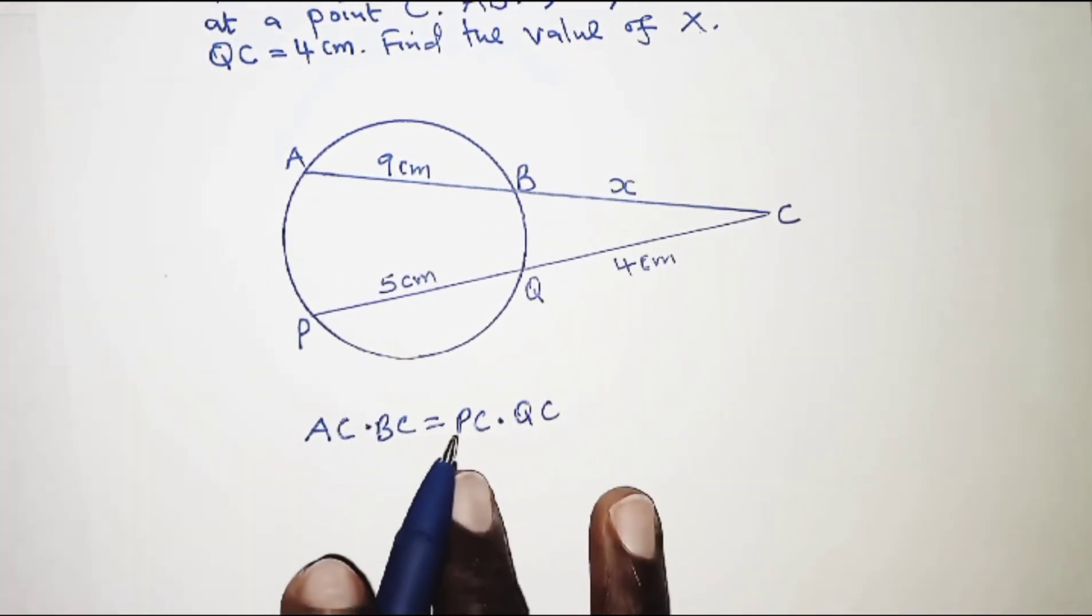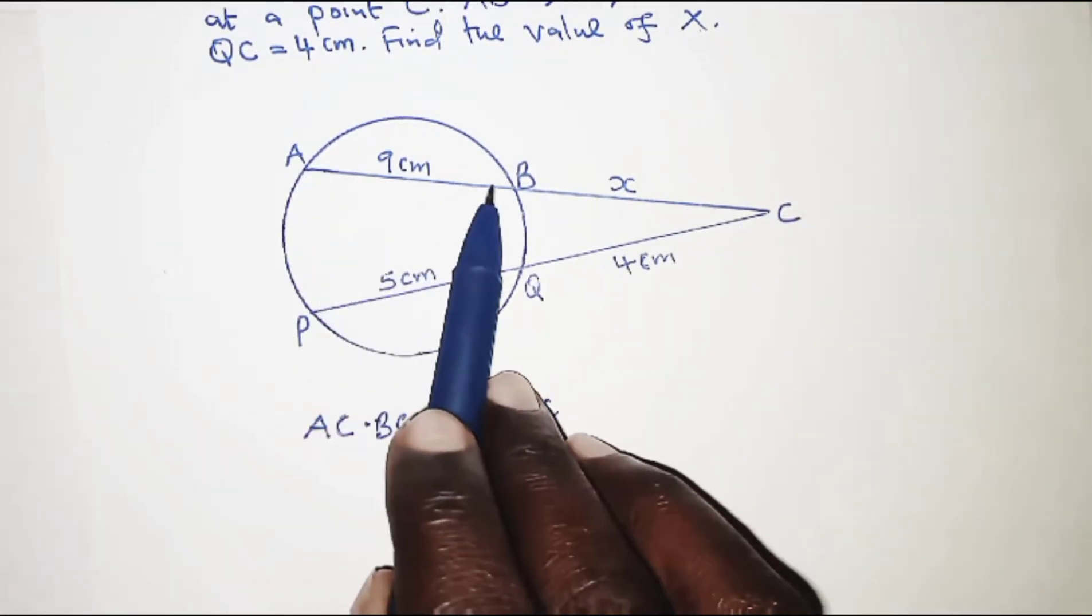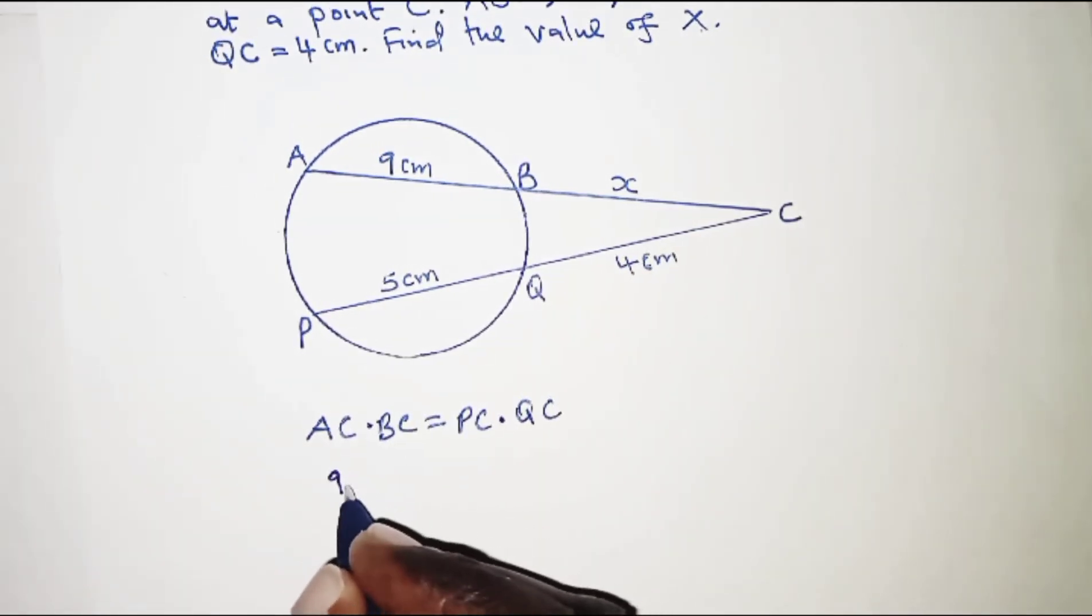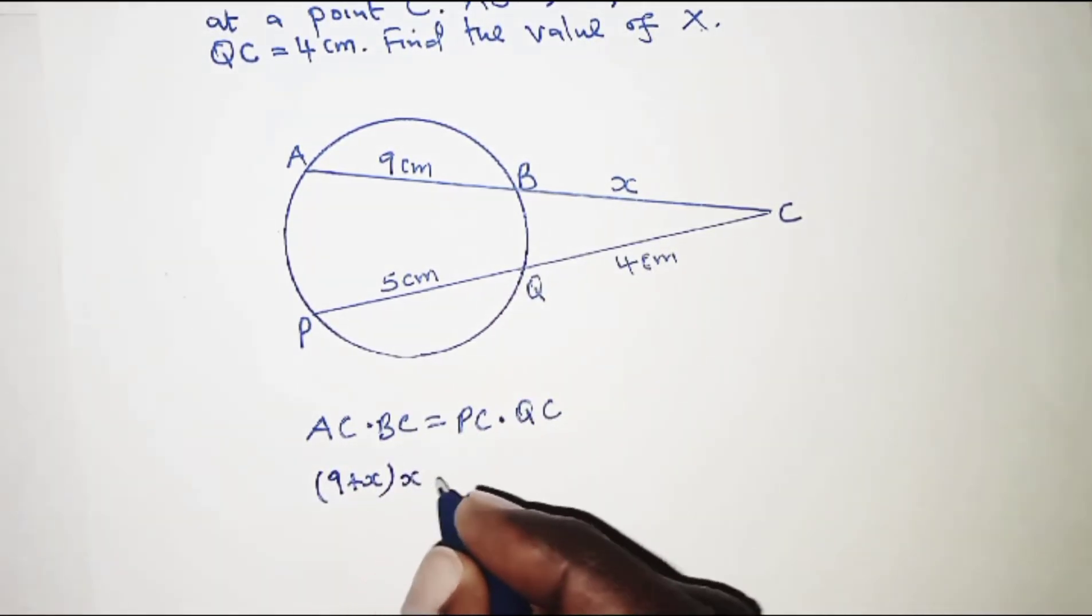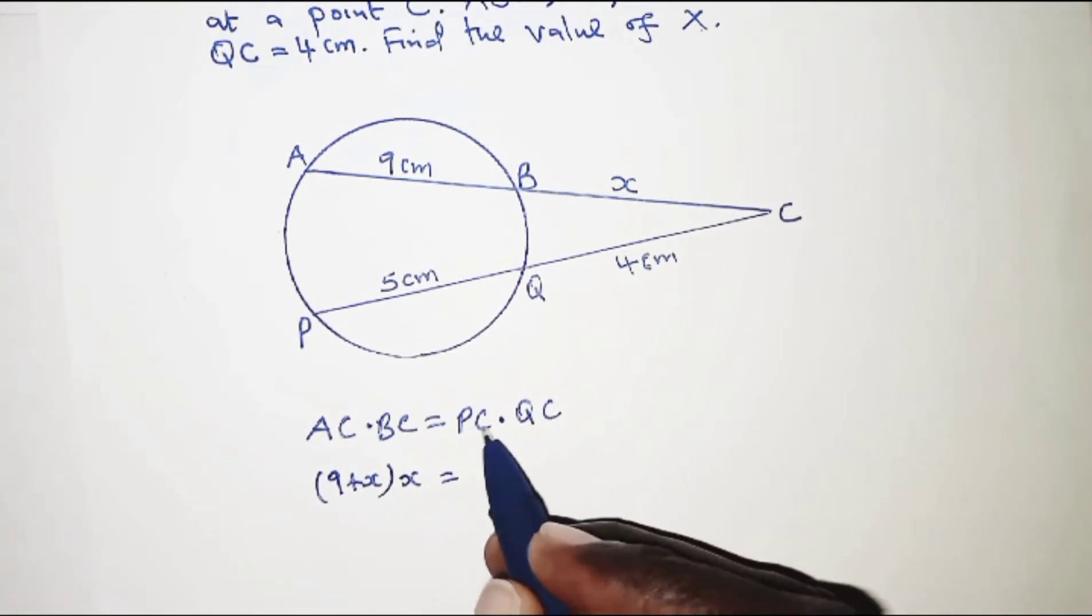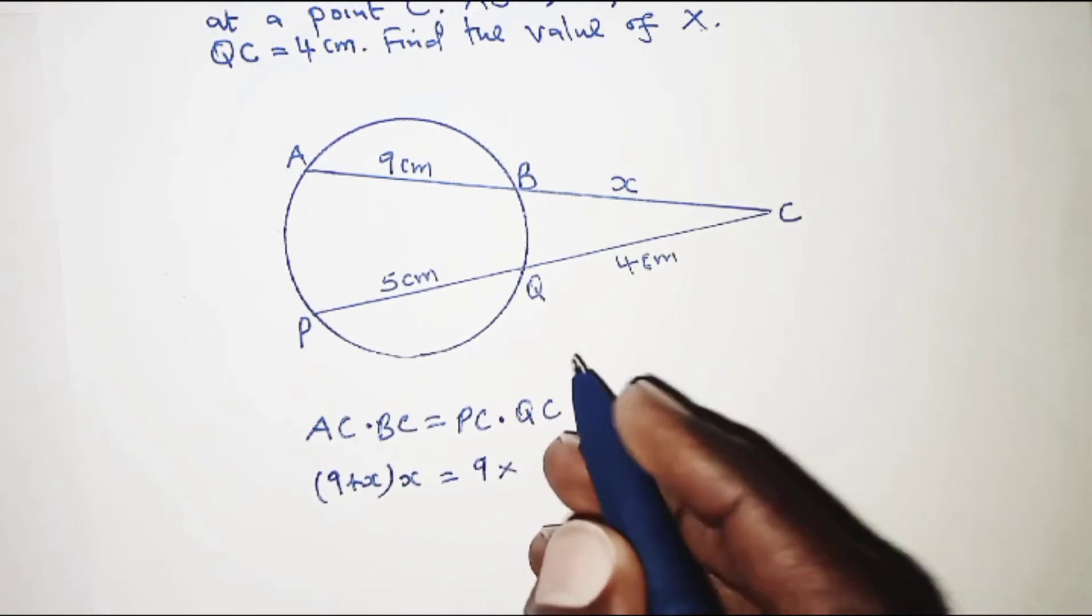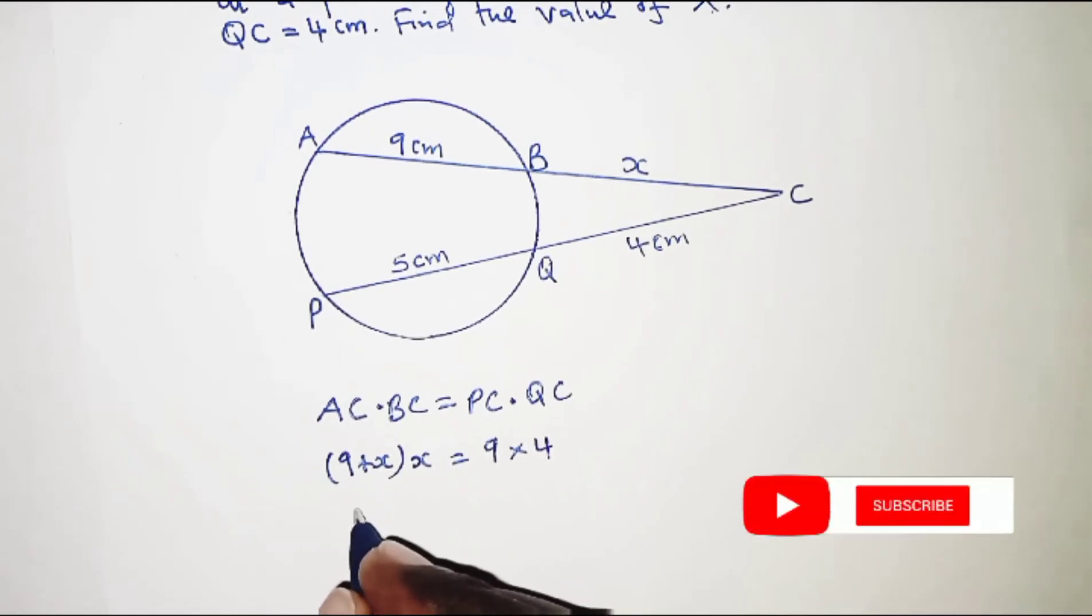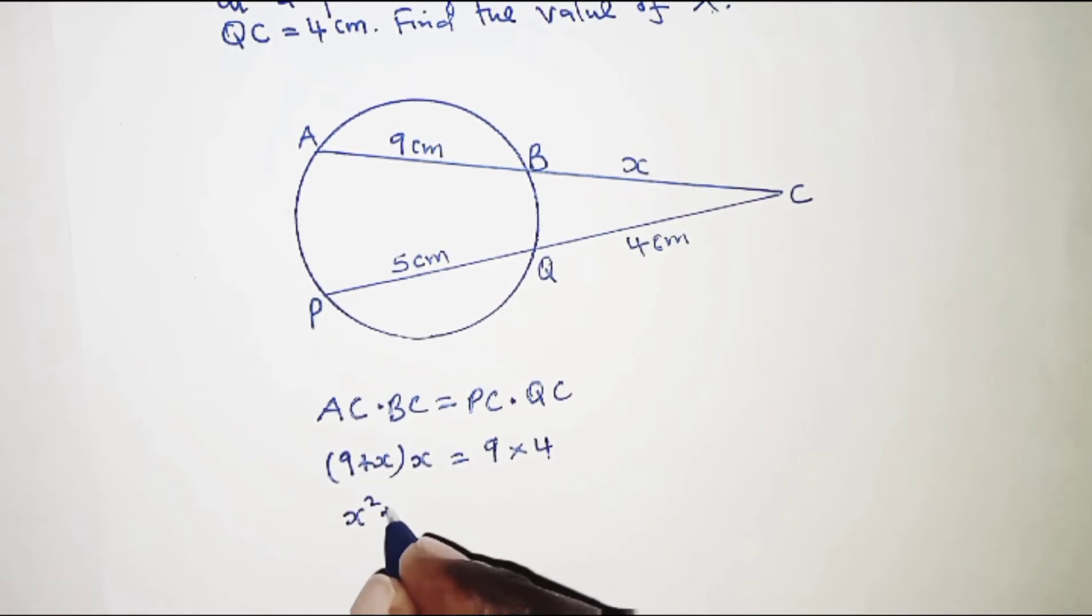Length AC is 9 plus x, so AC = (9+x). BC is x, PC is 9 centimeters, and QC is 4 centimeters. So we have (9+x)·x = 9·4. When we expand the brackets, we get x² + 9x = 36.